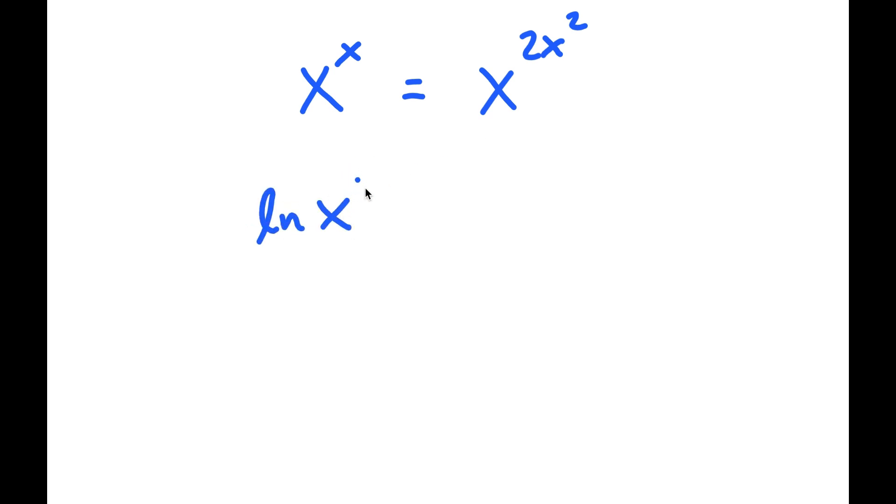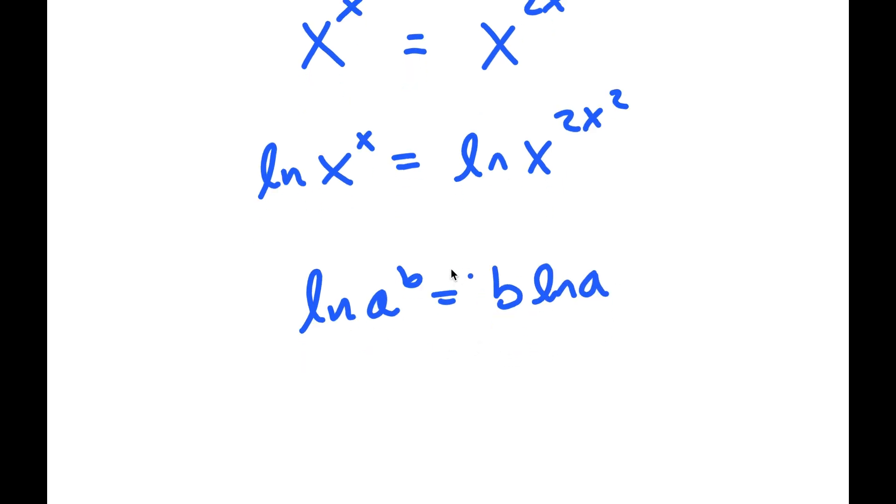So to solve this, I'm going to first start by taking the ln on both sides. And if I have something in the form ln a to the power of b, this is equal to b times ln a.